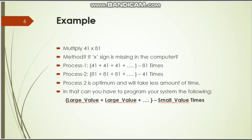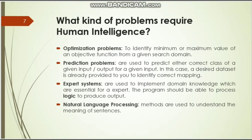Human intelligence is more powerful than the computer, and the computer can get intelligence from the human only. There are four kinds of problems that require human intelligence: optimization problems, prediction problems, expert systems, and natural language processing. An optimization problem gives an optimum solution like a minimum or maximum value. A prediction problem predicts an optimum solution rather than following a particular method. An expert system deals with a database of rules and corresponding actions, and natural language processing is the method of understanding various languages through the computer.